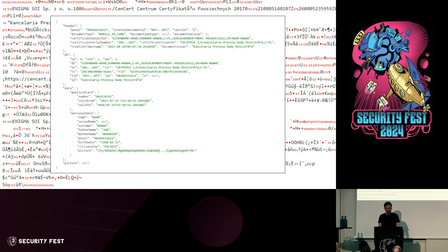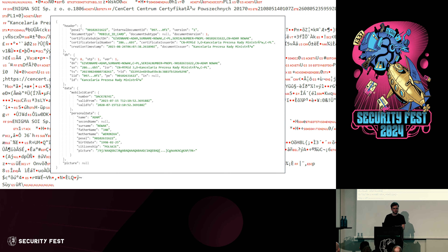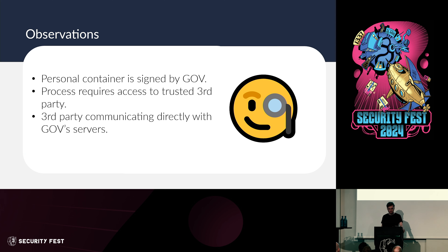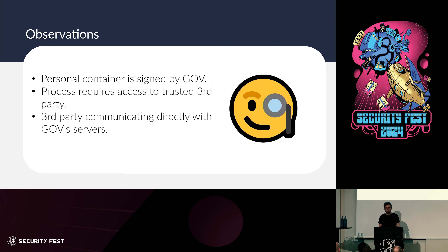Here's an example of what the container looks like — just a JSON file with identity fields. Importantly, appended to the container is a government signature. The government takes the JSON file, signs it, and appends the signature to it for data integrity purposes. So you can't just break the encryption, change a field in the JSON, and go to the bank to verify as someone else. The onboarding process looks strong — it requires a trusted third party that connects directly with the government and is considered a source of truth.